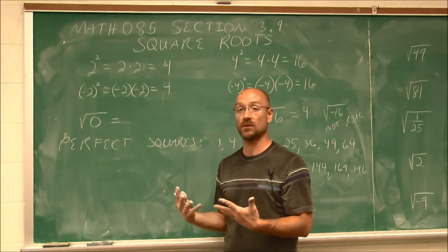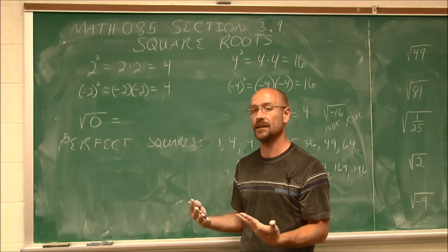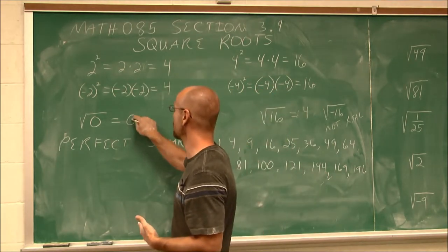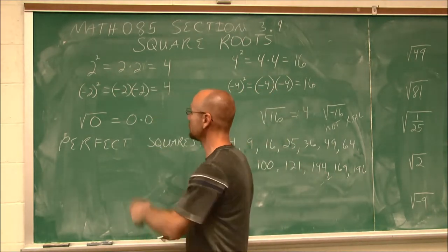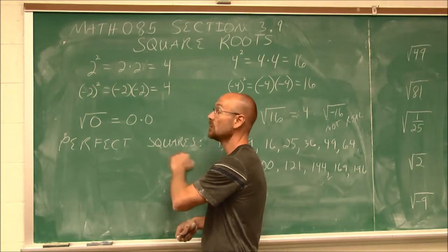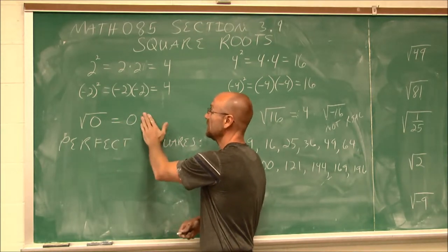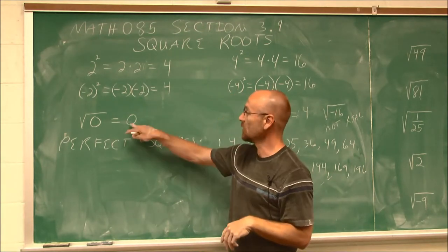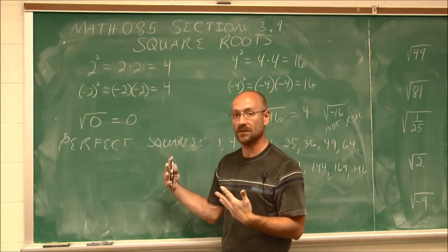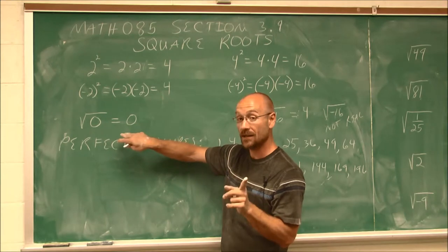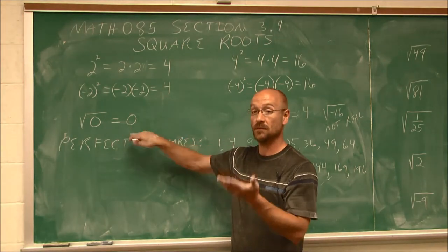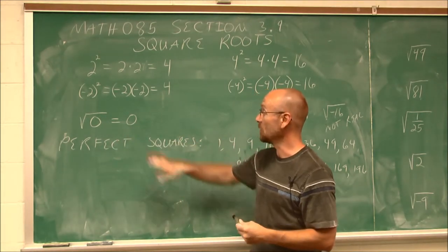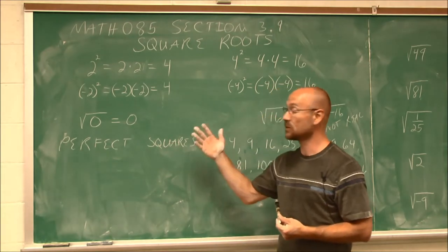Well, if we think about 0, 0 times anything is 0, even if it's 0 times itself. 0 times 0 is 0. So the square root of 0 is 0. Because 0 times itself is still 0. So notice this one wouldn't have a plus or minus possibility, because 0 is neither positive nor is it negative. So the square root of 0 is 0.